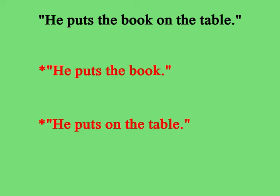Prepositions are often thought of as different words altogether, but they're actually related to noun cases. Basically, a preposition can be thought of as a helper word to a word in a different form, usually a different type of object. For example, 'I put the book on the table' — 'table' is a prepositional object, supported by the preposition 'on.' If I leave out any of these subjects or objects, the sentence is ungrammatical and nonsensical.